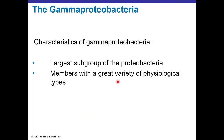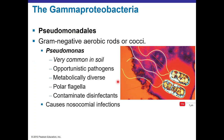Gamma Proteobacteria is the largest subgroup of Proteobacteria with diverse physiological characteristics. Pseudomonadales includes gram-negative aerobic rods or cocci. Pseudomonas is commonly found in soil, is an opportunistic pathogen, is metabolically diverse, and has polar flagella. Pseudomonas aeruginosa is one of the most feared hospital bacteria — it causes nosocomial infections and is highly resistant to disinfectants and antimicrobials.